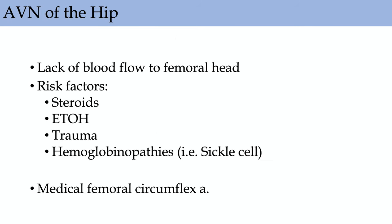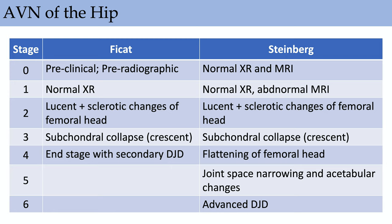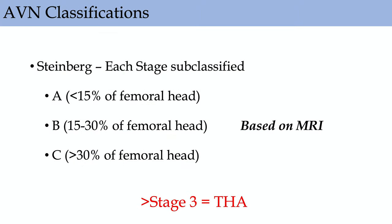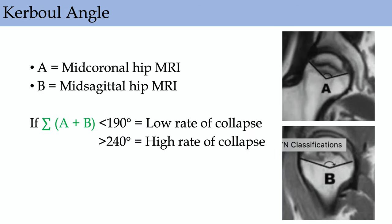AVN of the hip involves lack of blood flow to the femoral head. Risk factors include steroids, prednisone use, alcohol, trauma, and certain hemoglobinopathies. Primarily, blood supply to the femoral head in adults comes from the medial femoral circumflex artery. Stages use either the FICAT or Steinberg classification, both using x-ray and MRI. The most important point is stage three — subchondral collapse — after which non-arthroplasty modalities are doomed to fail. The Steinberg classification is subcategorized A, B, C by percentage of femoral head involved on MRI; greater than 30% indicates total hip arthroplasty. The Kerboul angle uses mid-coronal and mid-sagittal planes: greater than 240 degrees means high rate of collapse; less than 190 degrees is low rate.